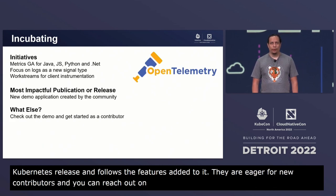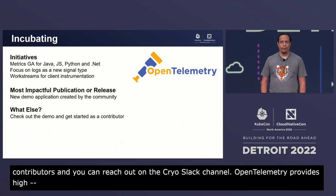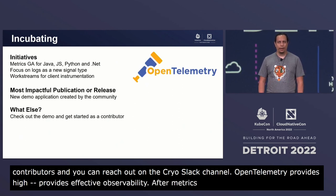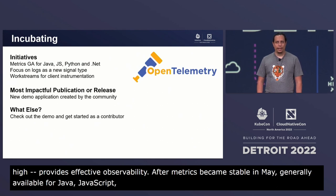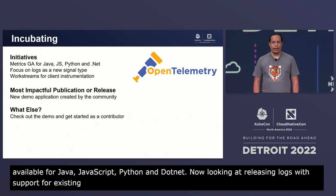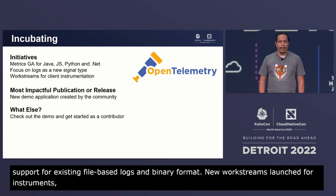OpenTelemetry provides high-quality, ubiquitous, and portable telemetry to enable effective observability. After metrics became stable in May, they've become generally available for Java, JavaScript, Python, and .NET. The project is now focusing on completing and releasing logs as a new signal type, with support for existing file-based logs and eventually a new strongly typed binary format. New work streams have launched for client instrumentation capturing poor client performance and things like high latency.